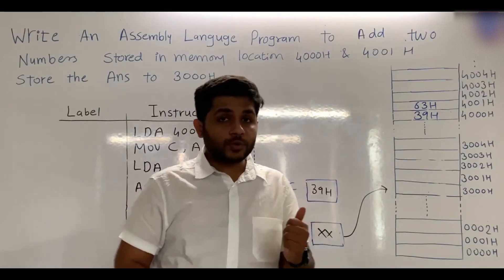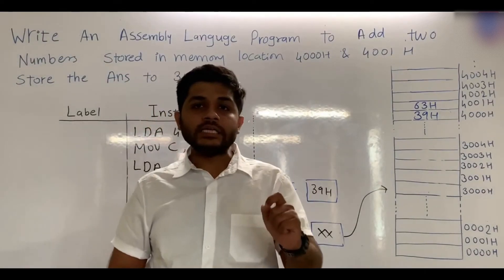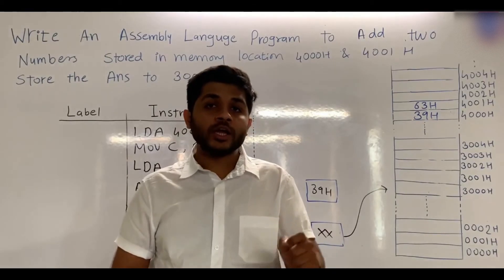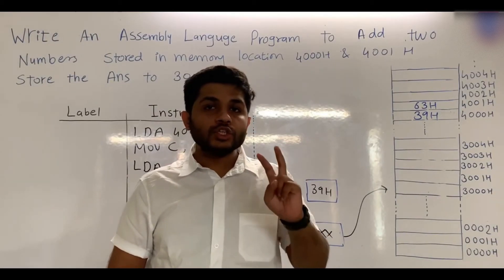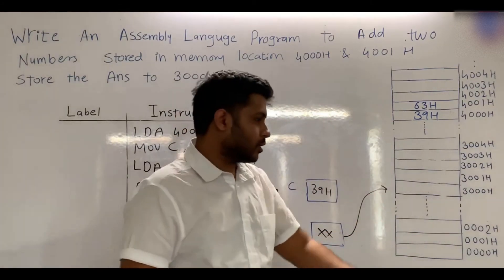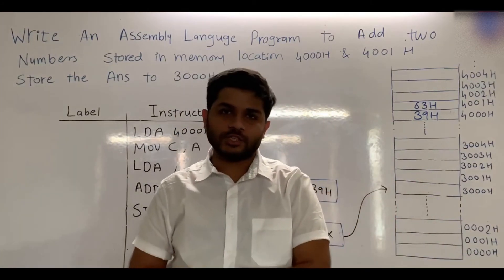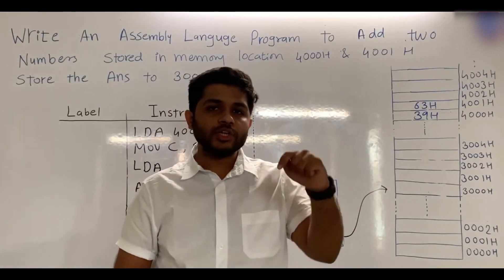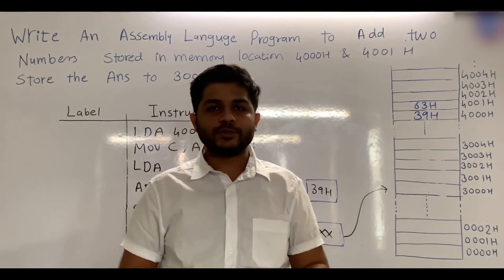And that's it for this program. Now you have to write one program by yourself: write an assembly language program to subtract two numbers stored in the same memory locations and store the answer in 3000H. If you have any doubt, you can ask me in the comment section. Thank you so much.